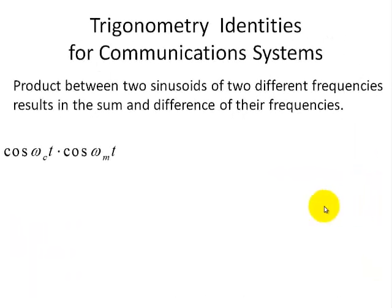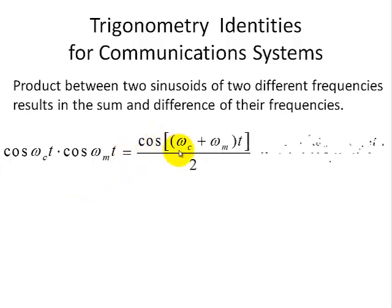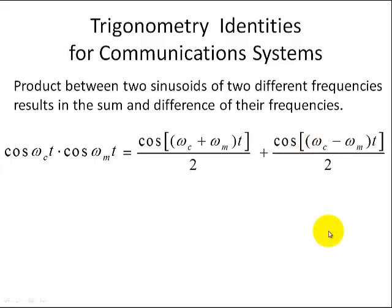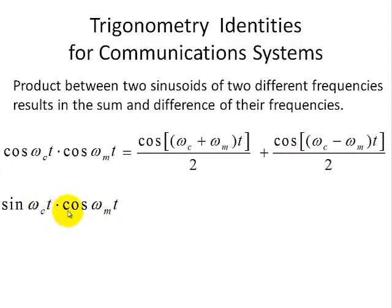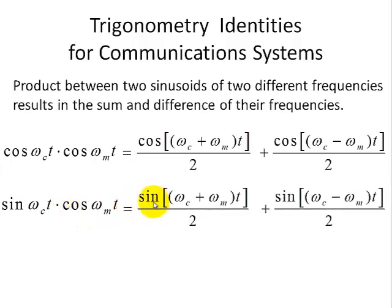In an earlier video, we showed the product of two cosine functions with frequencies omega_c and omega_m results in the sum and difference frequencies of two sinusoids. Now we're going to show that this identity also results in a sum and difference frequency, except we're dealing with sine functions, with a weight of one-half.